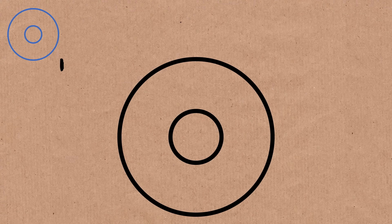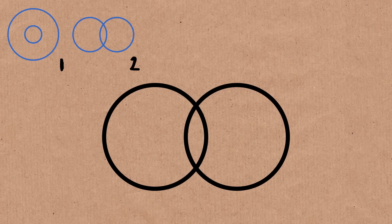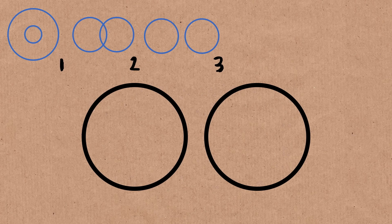What if you have two circles? They could be inside each other, they could cross each other, or they could be separated. So for two circles, three ways.